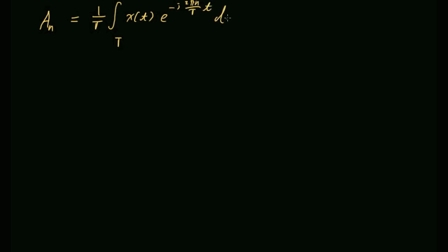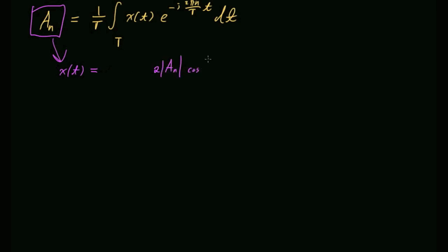What we figured out was that if you knew a-sub-n, you could rebuild x(t). It's two times the magnitude of a-sub-n, cosine of omega-n — which is 2πn over big T — plus the phase angle of a-sub-n. And then you sum that over n equals 1 to infinity, plus maybe an a-sub-0 term if you have one.